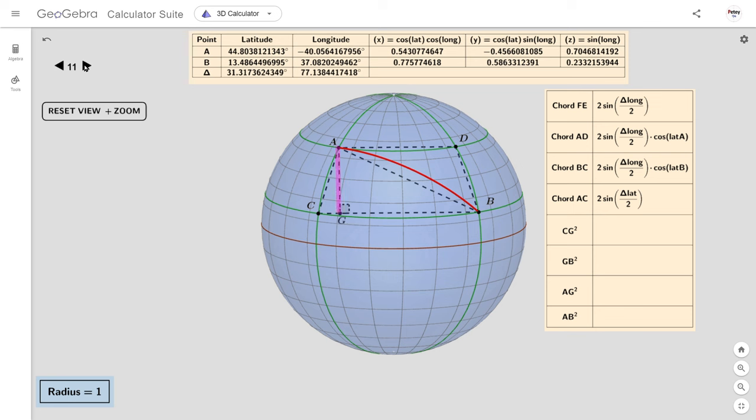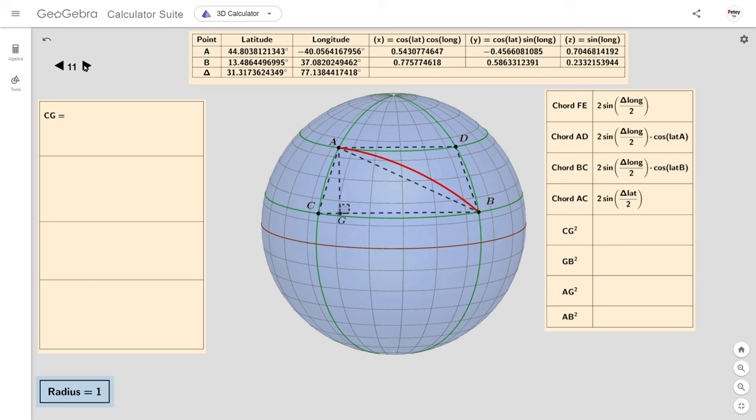Before we can work out AG, we need to look at CG. CG is simply half of CB minus AD, and this is the square. Back to Pythagoras then. Plugging in what we've just got for CG squared, we can now get this for AG squared, while GB is simply half of CB plus AD, and this is the square.